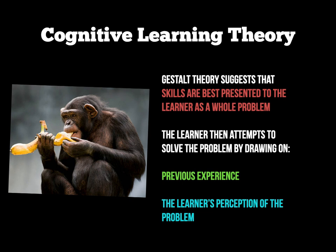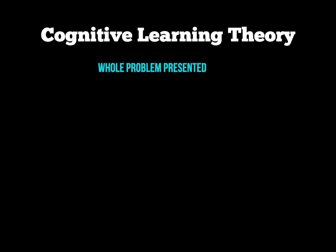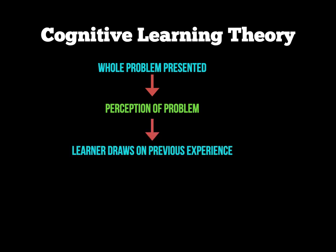We apply that idea to sport and learning skills. For your exams you need to know this exact step process. First, a whole problem is presented. The learner then figures out what is required to be done. They draw on any previous experience. They then have a go at the task. They may not succeed initially, so the performer must remember what they did in the first attempt and change something for the second attempt. This is what is meant by intervening variables — remembering what happened and adapting to try the task a different way.